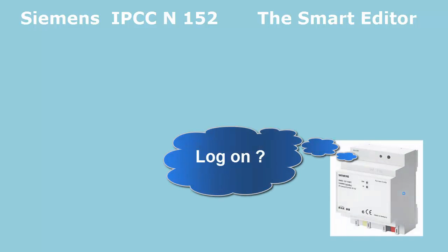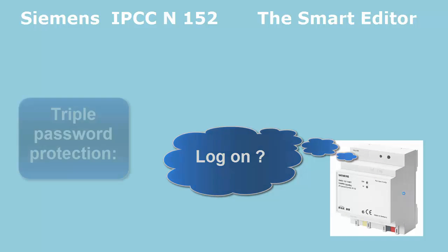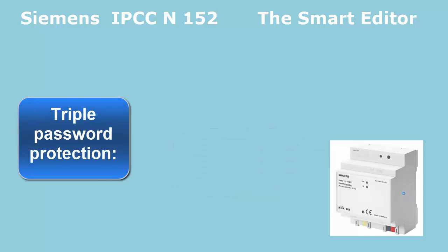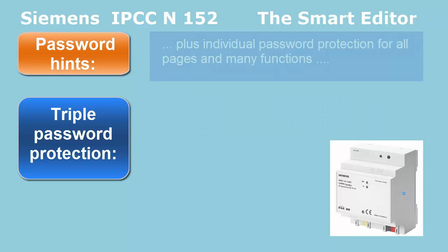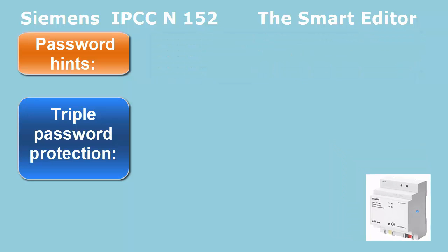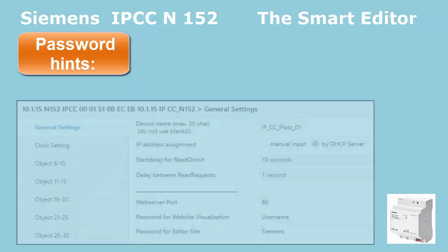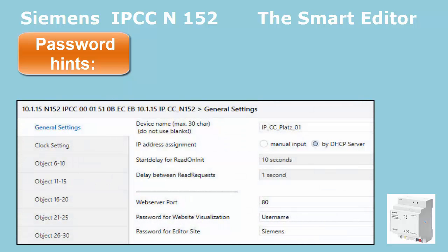Password Hints. To obtain the best security level, the IPCC offers triple password protection for the login process. There are two passwords for the editors and further on the user password. The IP Control Center also offers individual password protection for pages and functions, as explained in the General Design Chapter. Here is a summary of how login passwords are created and how they can be changed.